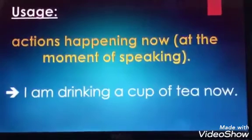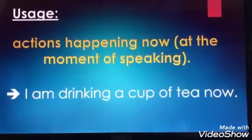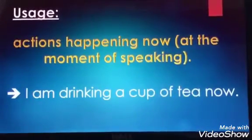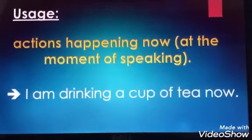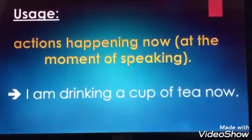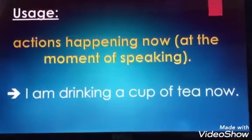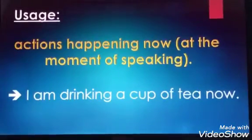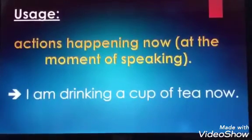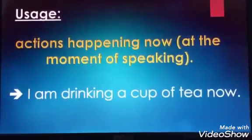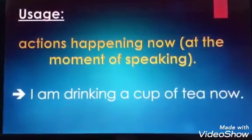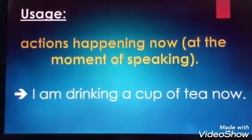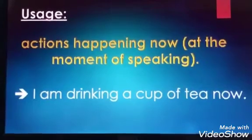The Present Progressive describes actions that are happening now or at the moment of speaking. What are you doing now while you are speaking? What is she doing now? So, if an action is happening now, at the moment of speaking, I should use the Present Progressive. Look at this sentence: I am drinking a cup of tea now.